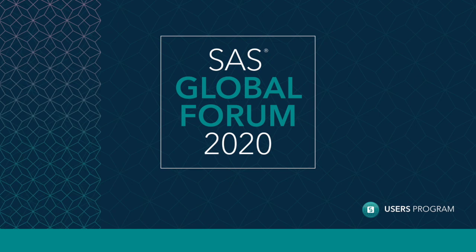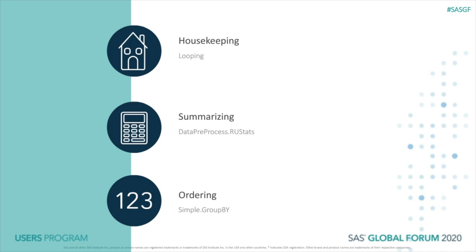The focus of my paper and this presentation is common tasks — tasks that you're used to performing in other languages. I'll show you what they look like when done with CASEL. I've broken those tasks into three broad categories: housekeeping, which I could have just as easily called table management, summarizing, and ordering. I'm going to focus on one subsection or example for each of those broad categories. Within housekeeping, I walk through a looping example. For summarizing, I'll focus on the RU stats action. Ordering is a slippery topic in the CAS world, so I'll discuss what you can and cannot do and show an example of group by.